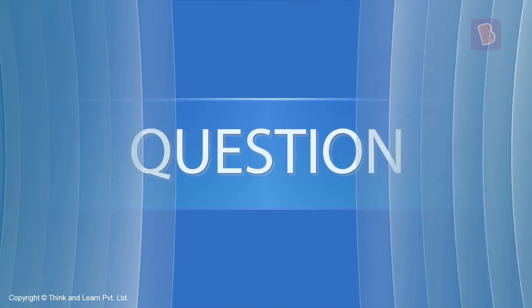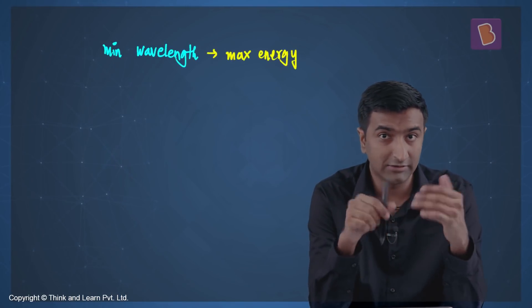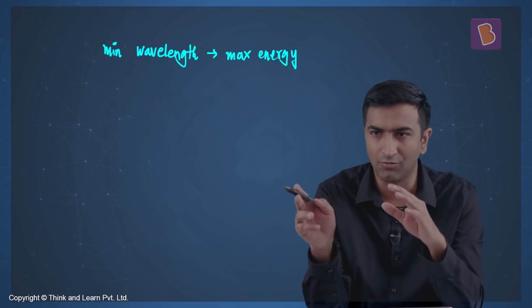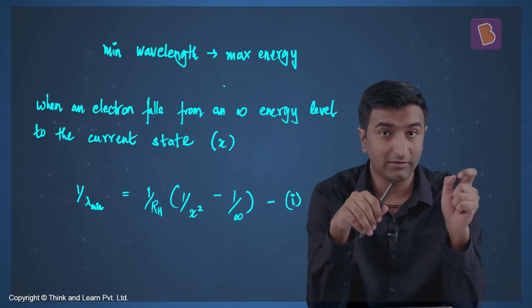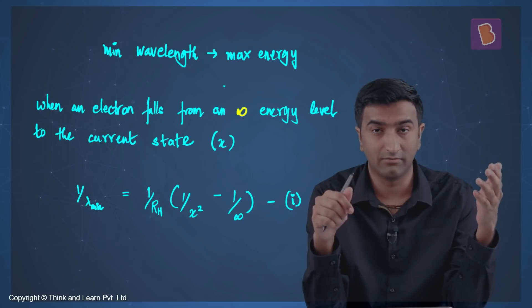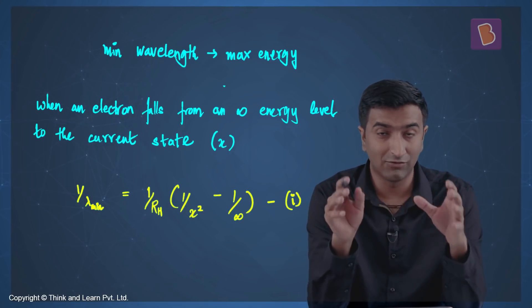In this question, we're given that λmax to λmin ratio is 1.8, and we need to find the first excited state of the electron. We're talking about emission. To get λmin and λmax: λmin corresponds to maximum energy, so from Rydberg's equation, 1/λ equals this expression. I take the initial energy level to be infinite, so the electron falls down to level x — that gives the λmin value.